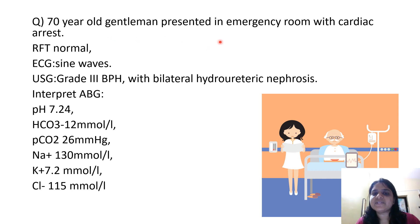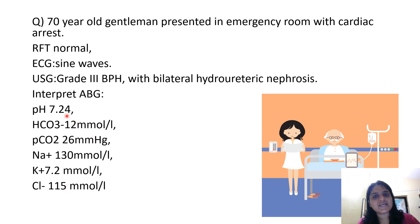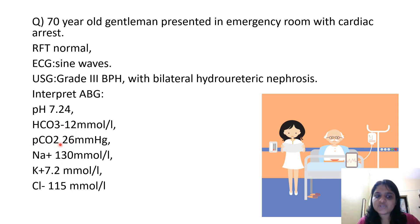Next question. A 70-year-old gentleman presented in the emergency room with cardiac arrest. Renal function tests are normal. ECG showed sine waves. Ultrasound shows grade 3 BPH — benign prostatic hypertrophy — with bilateral hydroureteronephrosis. Interpret the ABG: pH 7.24, bicarbonate 12, PCO2 26, sodium 130, potassium 7.2, chloride 115. First, check pH — 7.24 means acidosis. The bicarbonate is 12, which is decreased (metabolic component), and PCO2 is 26, which is also decreased (respiratory component). If it were respiratory acidosis, PCO2 should have increased. Since both bicarbonate and PCO2 have decreased in the same direction, it is metabolic acidosis with respiratory compensation.